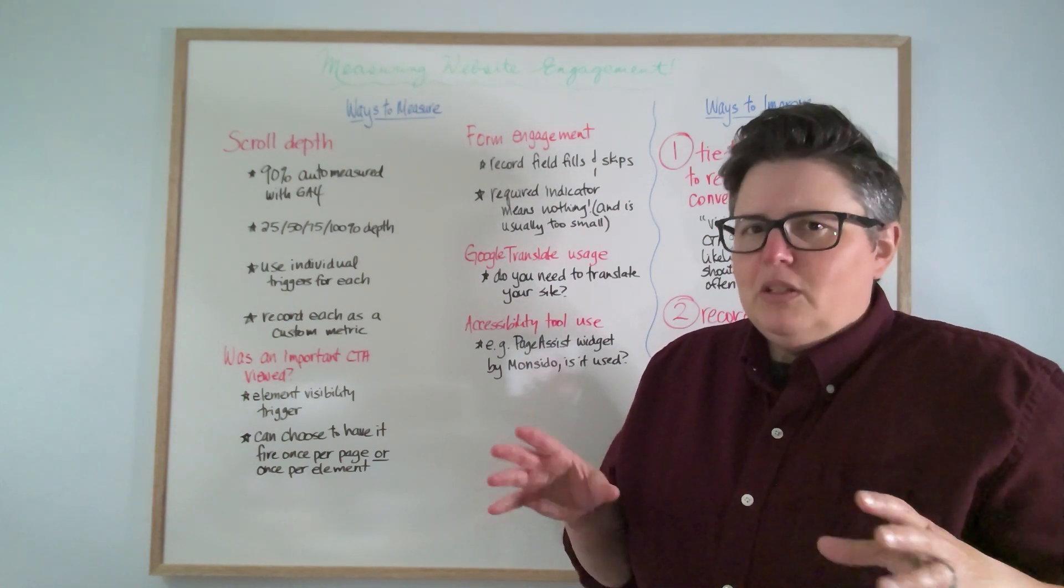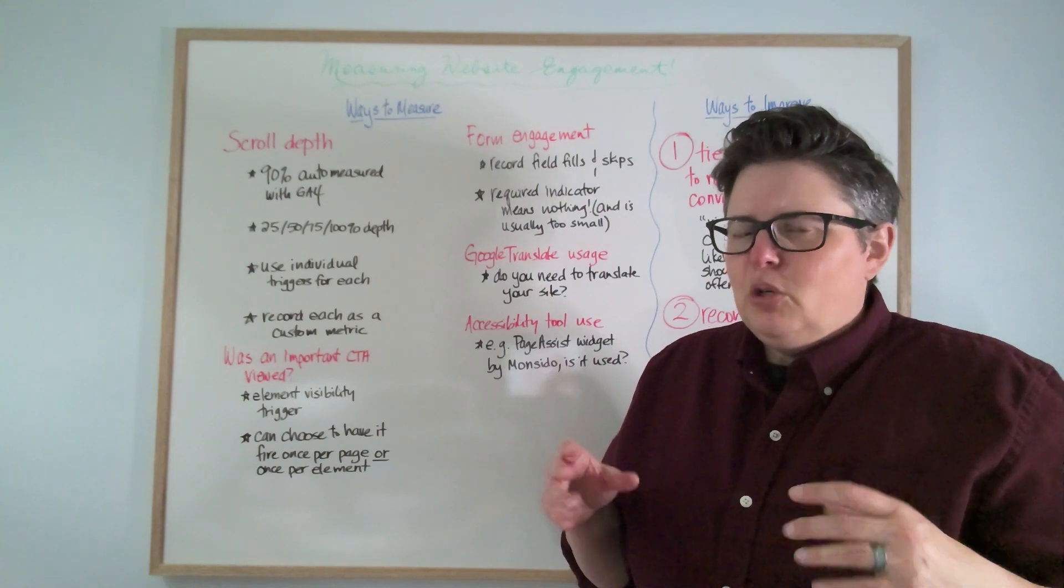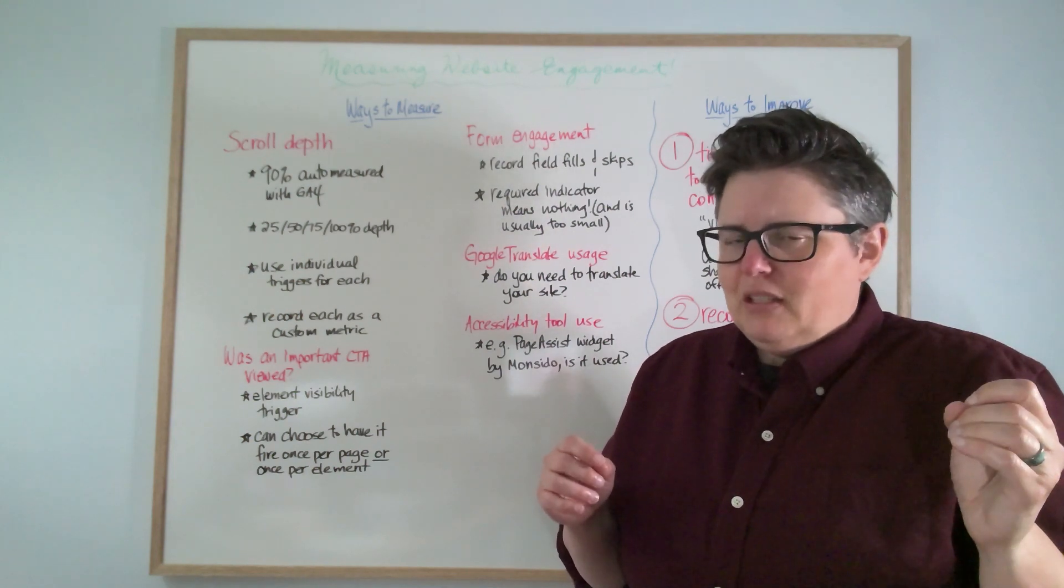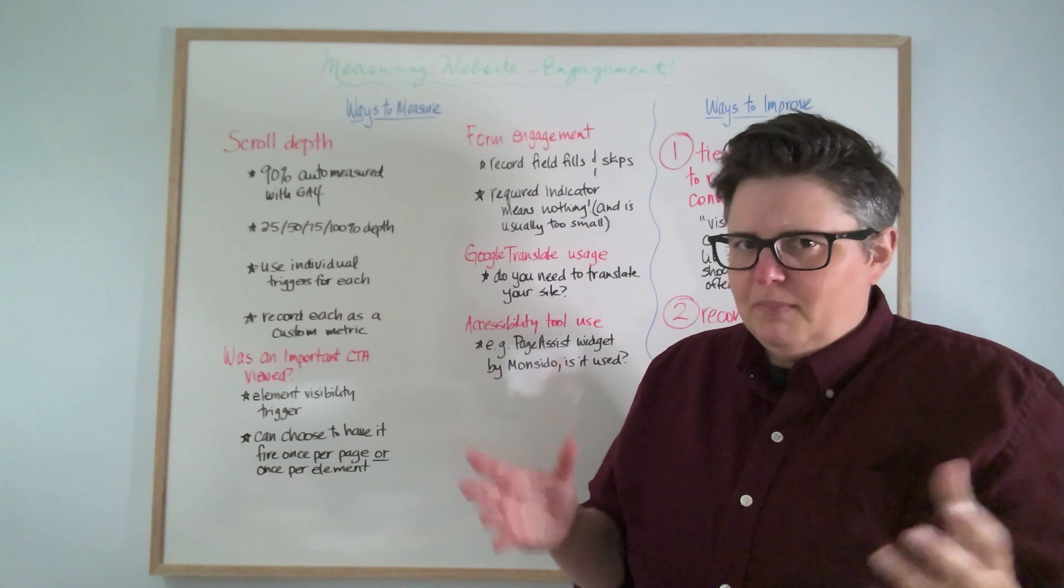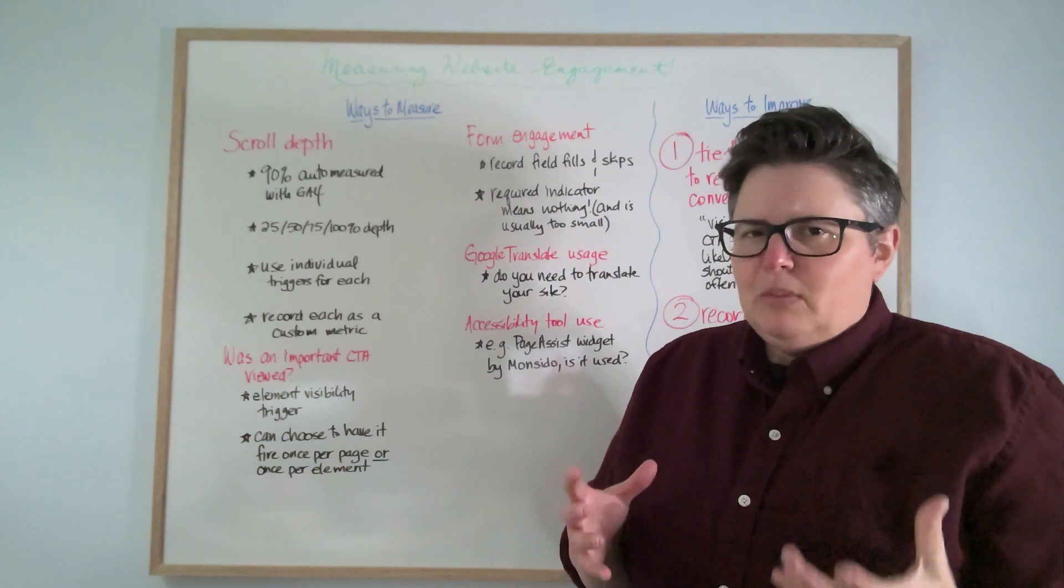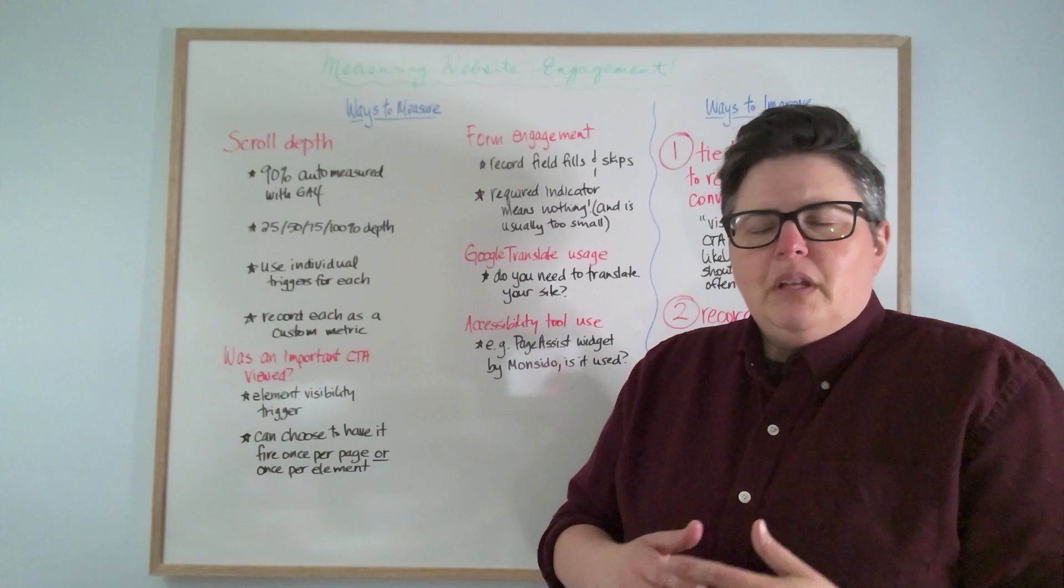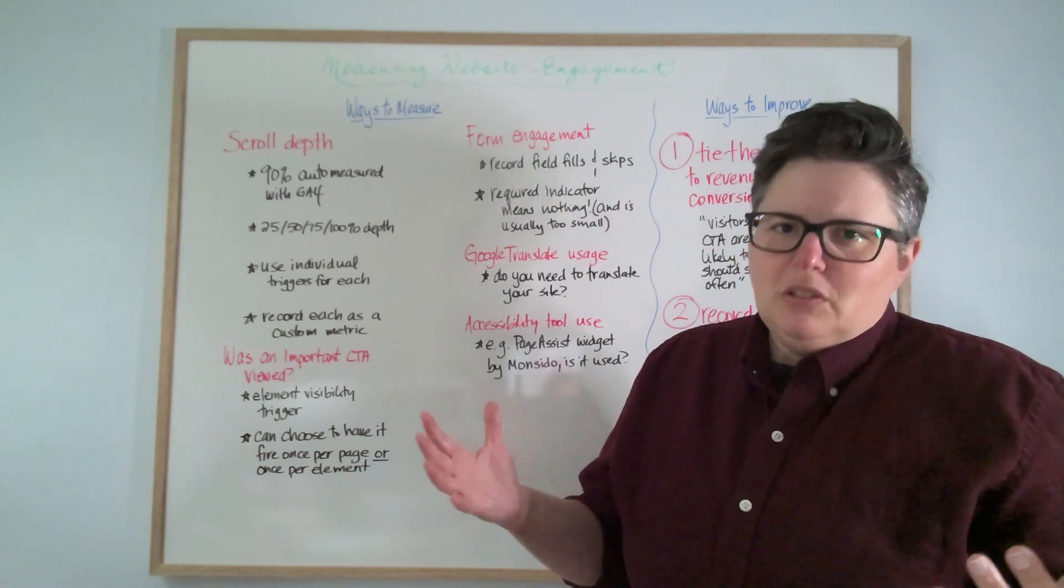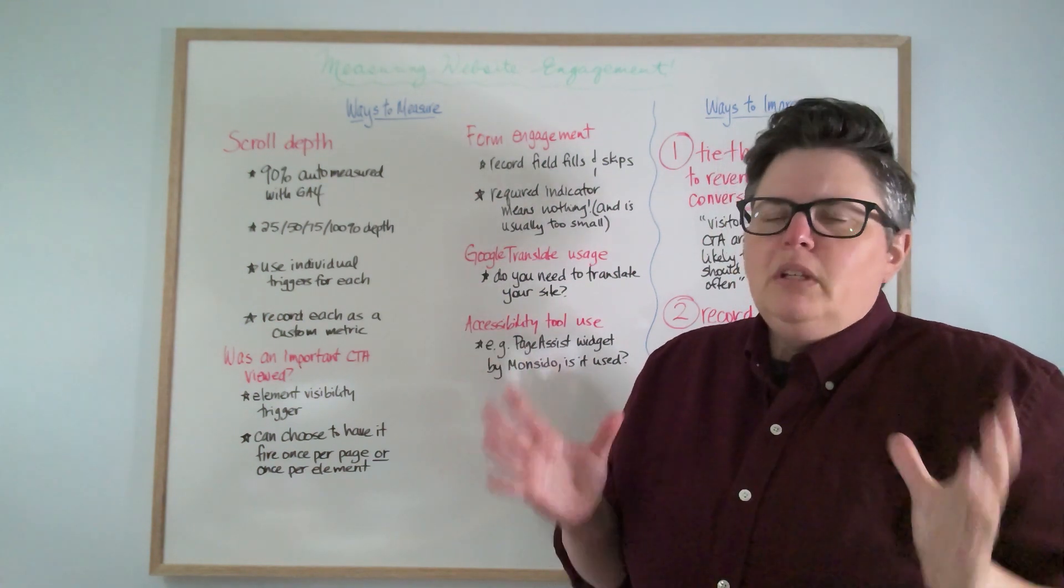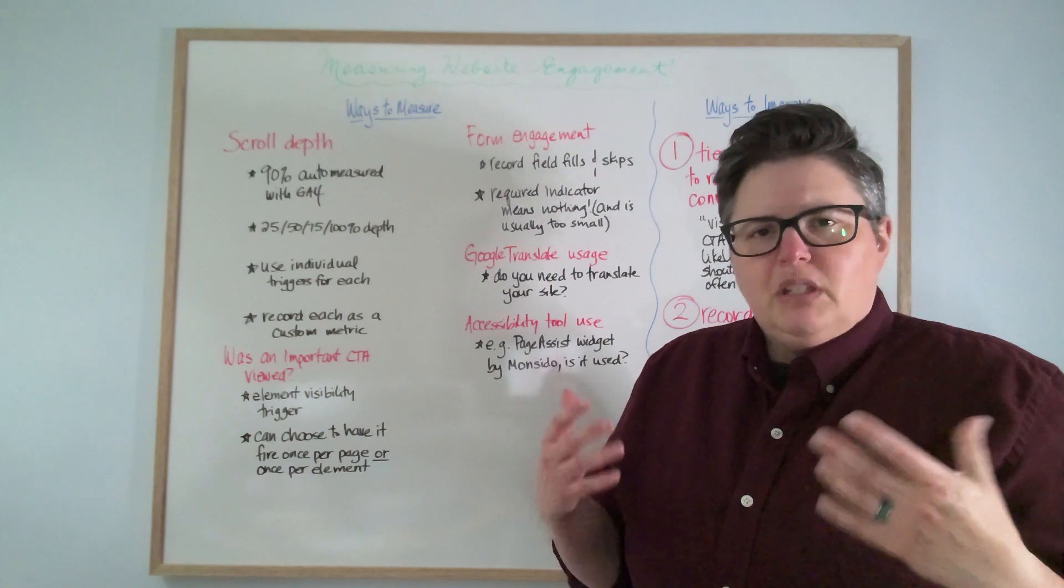We've had forms for a long time now. Not a lot of people still know that little star means required. They think they have to fill everything out. It seems intimidating. They walk away. I think it's pretty well accepted knowledge by now. But I also think a lot of people are like, oh, but we have to have this big form for reasons. So what you want to know is how people are engaging with that form.